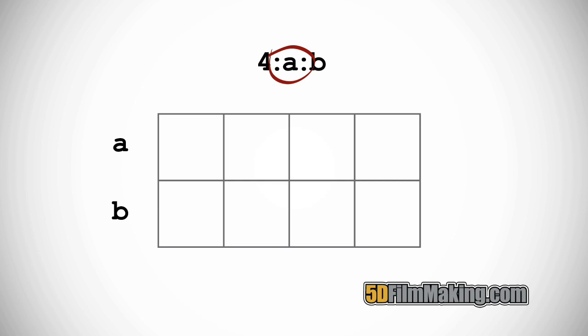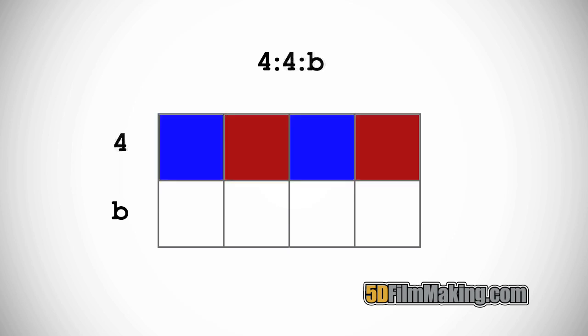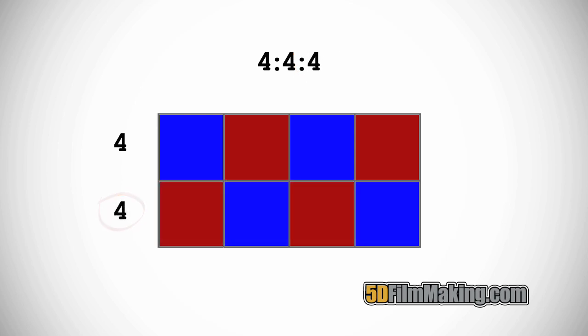The second number, A, tells us how many pixels in the top row, the A row, are going to get chroma samples. And the third number, B, tells us how many pixels in the bottom, the B row, are going to get chroma samples.